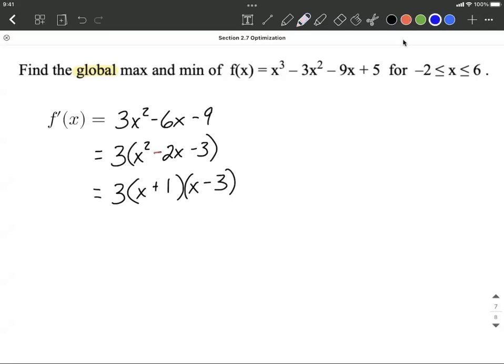This is going to point us towards having critical numbers or critical values at, for this x, that would be at x equals negative 1. And for this x, that's going to be at x equals positive 3. So you may be saying, okay, that'll make the derivative equal 0. So we have a possibility of a maximum or minimum there. Those could be local. They could be global. We're not really sure.